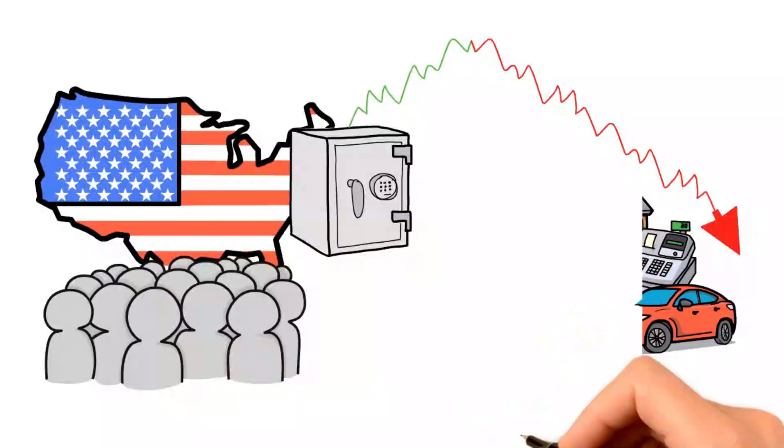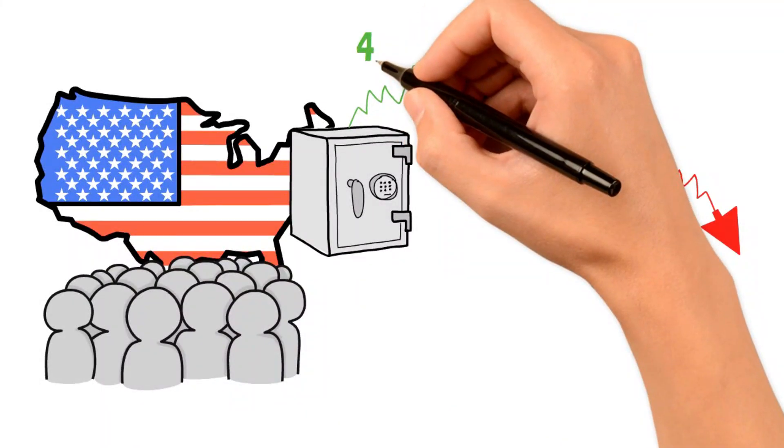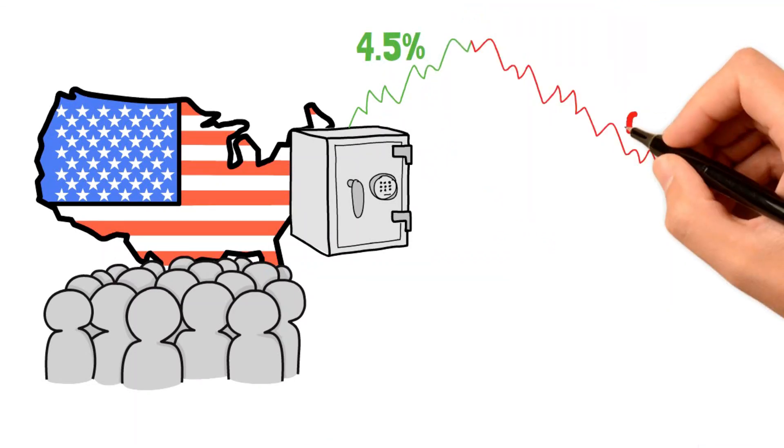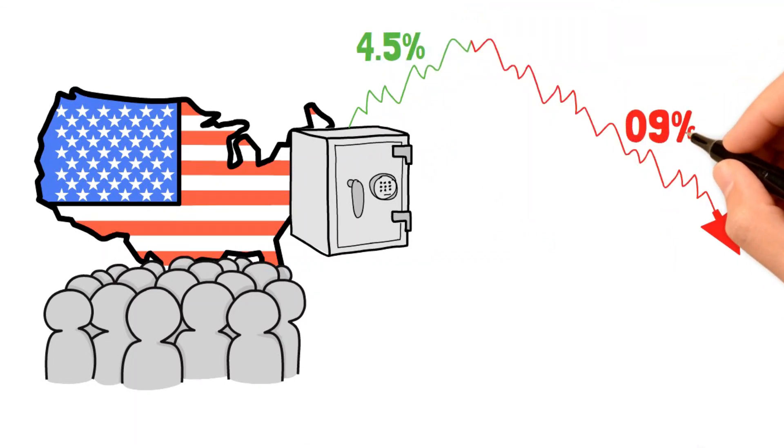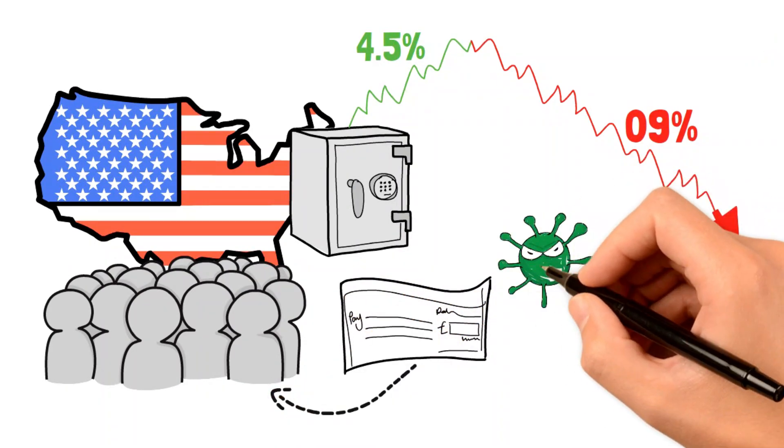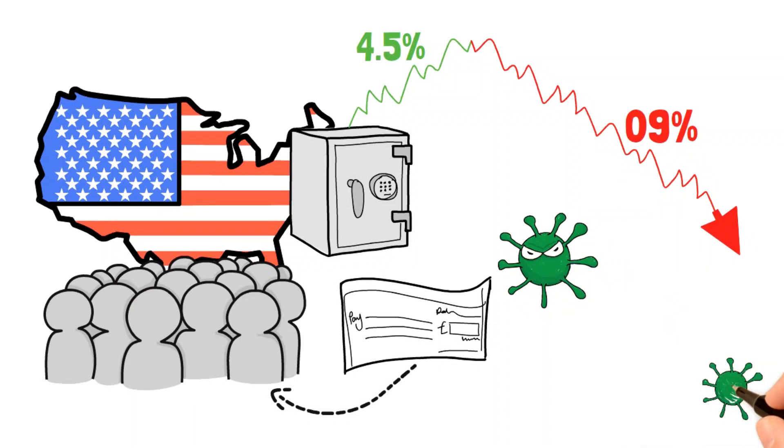As of 2023, the personal saving rate is around 4.5%, noticeably lower than its historical average of nearly 9%. This decline becomes more pronounced during periods when stimulus checks were distributed, and spending remains constrained.